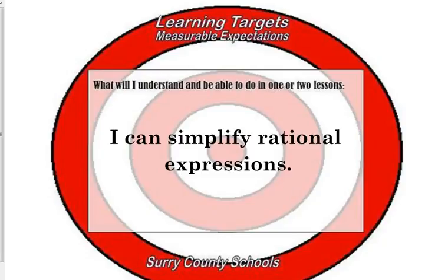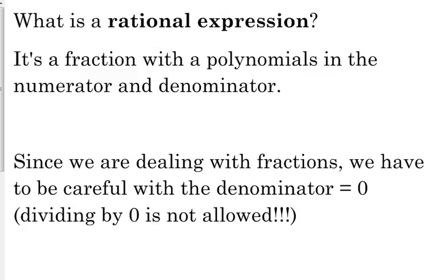We're talking about rational expressions. This unit is on rationals. Let's first establish what a rational expression is — think about the root word: ratio, meaning fraction. So a rational expression is a fraction with a polynomial. That makes a lot of sense. There are polynomials in the numerator and denominator. Sometimes there won't be a polynomial in the numerator — it may just be a constant — but as long as there's a polynomial in the denominator, it is considered a rational expression.